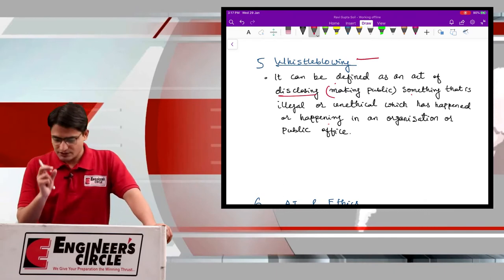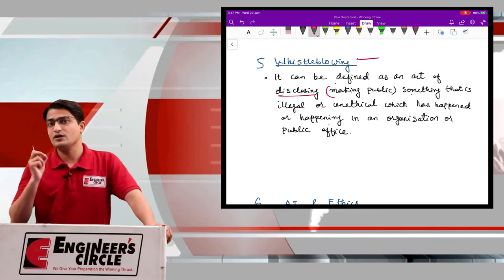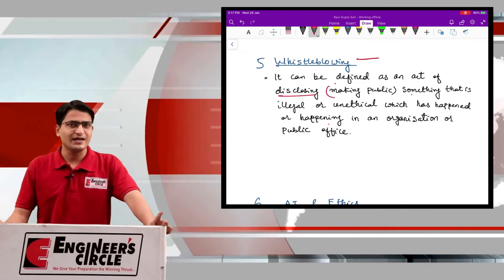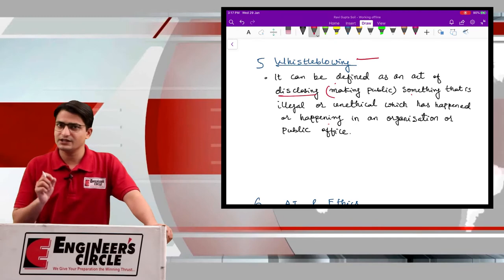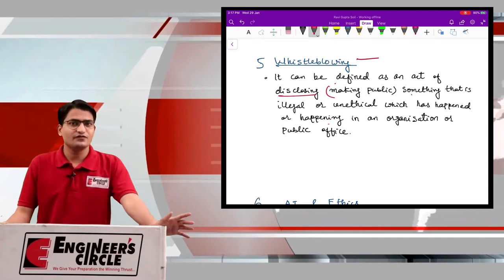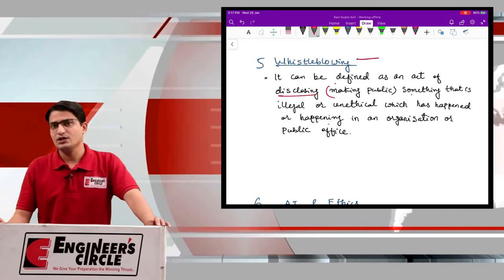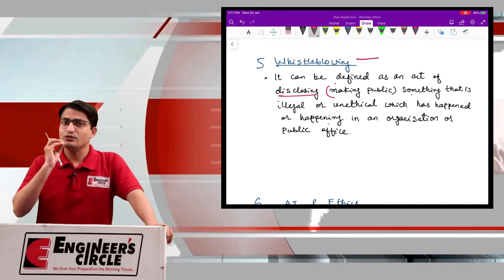This whistleblowing is very much relevant for governmental organizations. Why? Because we know that huge amounts of corruption occur, unethical conduct occurs in government organizations. So if there is any government employee who discloses about such illegal things happening in government, then it is called as whistleblowing.